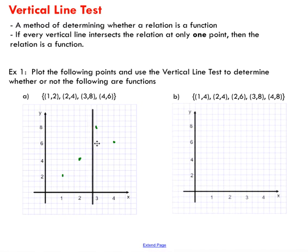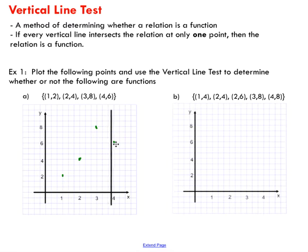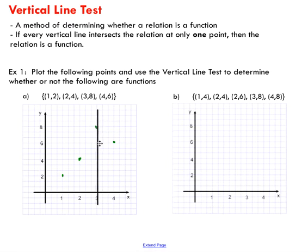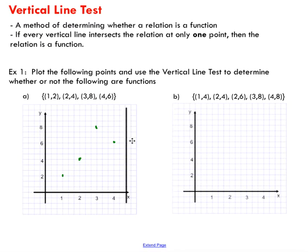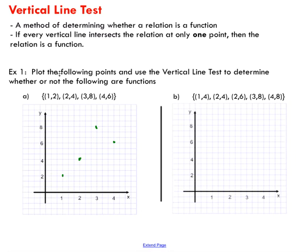You can see there is never a point where there are two points on my vertical line. I pass through the first point — there's only one point, one point, one point, and one point. So from that test, the vertical line test, we can conclude that this relation is a function.